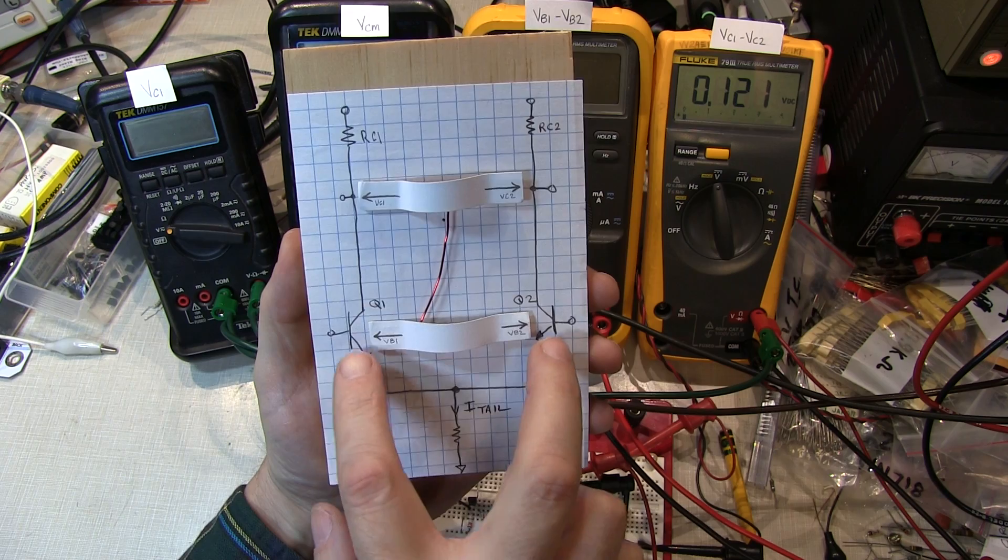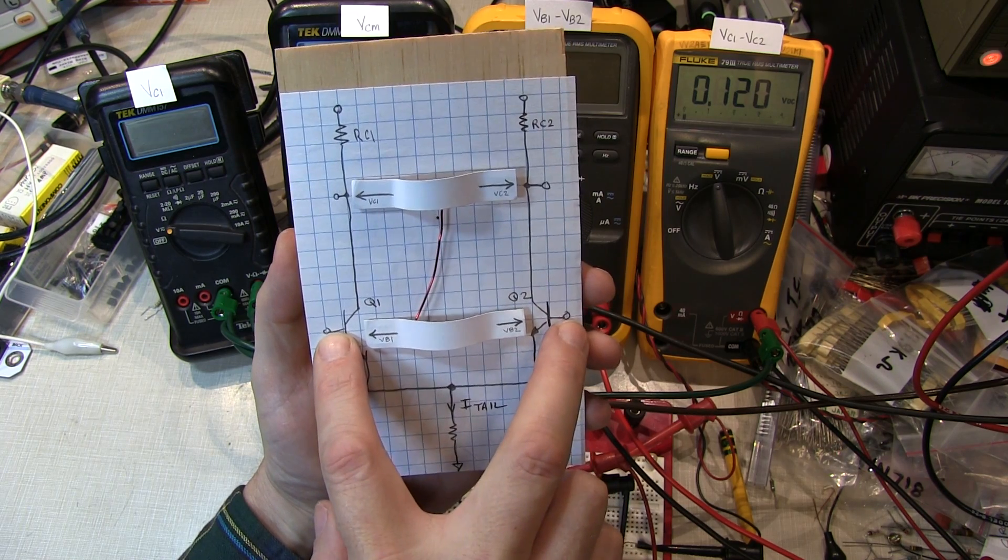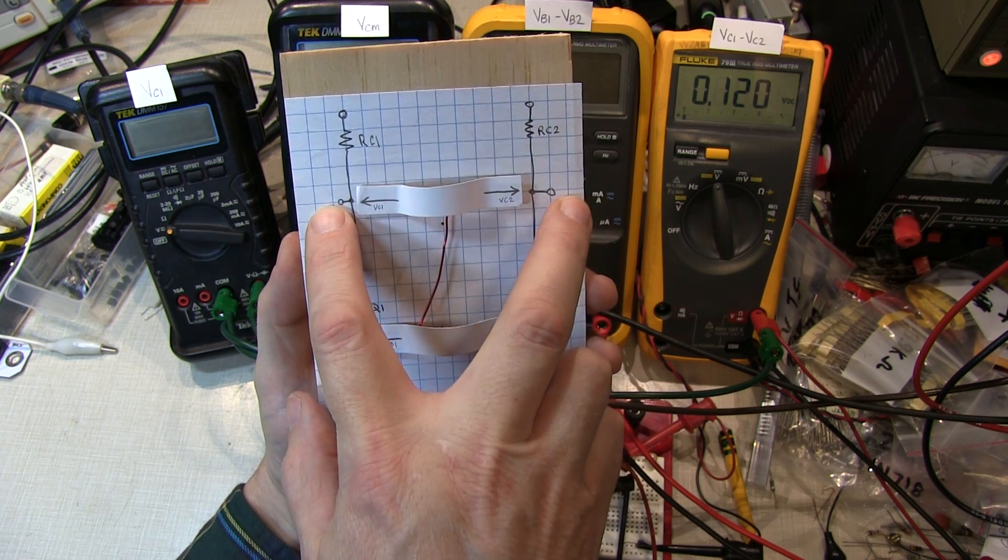So if VB1 is equal to VB2, they're both at the same voltage level, the collector voltages are at the same level.